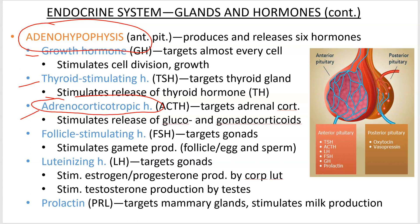Thyroid stimulating hormone does exactly what it says — it stimulates the thyroid to produce and release thyroid hormone. Adrenocorticotropic hormone: you can break down the word. Adreno means adrenal gland, cortico means cortex, and tropic means encouraging or stimulating. So this hormone targets the adrenal cortex, and it specifically stimulates the release of glucocorticoids and gonadocorticoids, which we'll get to when we get to the adrenal gland.